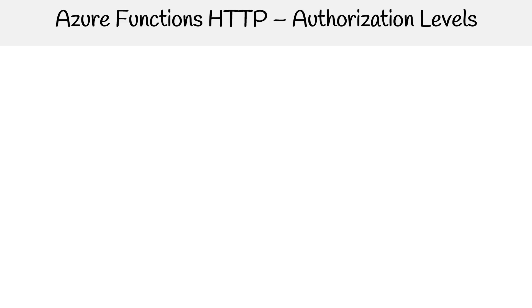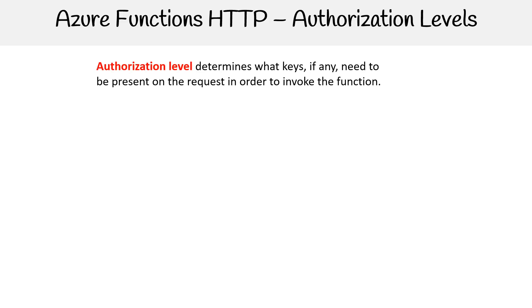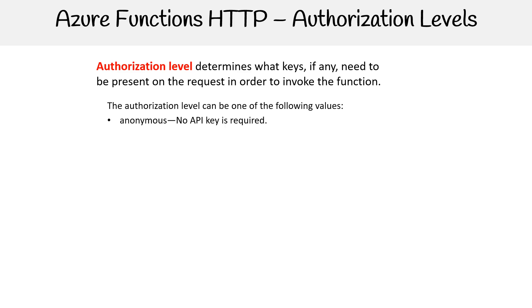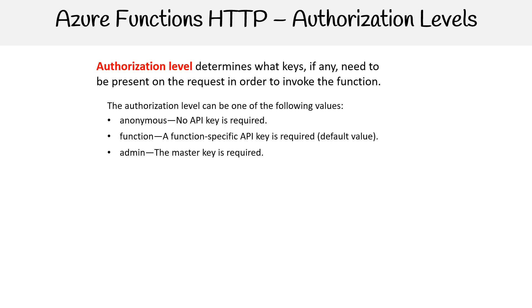Alright, let's take a look at authorization levels. This determines what key, if any, needs to be present when making a request when a function is getting invoked. The authorization levels can be one of the following: anonymous, function, and admin. Anonymous means that anybody can invoke the function — if it's an HTTPS request, anybody can trigger it. For function, you'll need a specified API key. This is the default value when you're creating your functions, and generally recommended as the means to use.